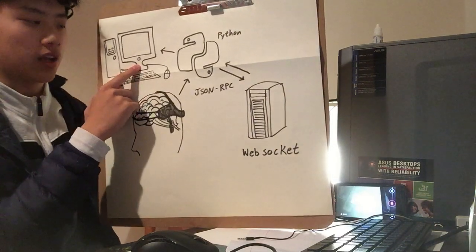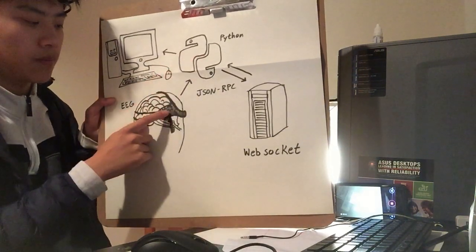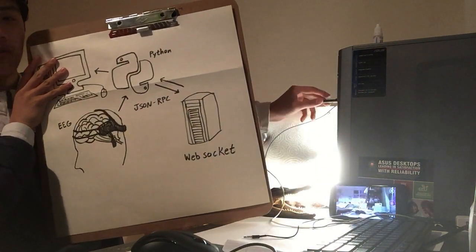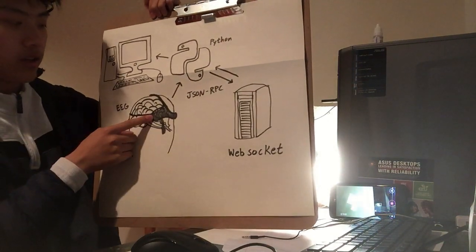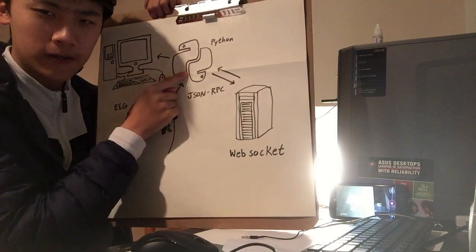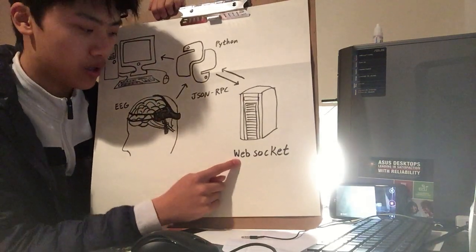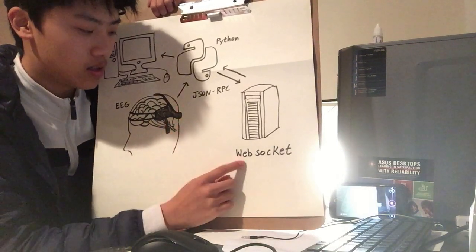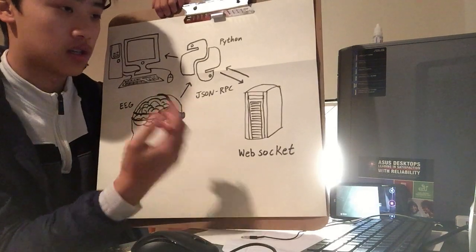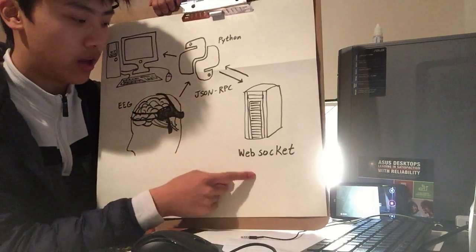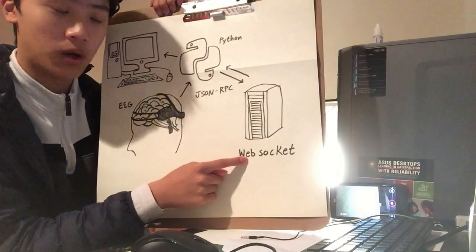I'm developing something, so it actually sends the signal to a Python program I've developed. To do that it uses Bluetooth — I have a USB dongle connected at the USB port of my computer. A command is something I set previously by wearing this EEG; the data is sent to a WebSocket server, which stores the data corresponding to each command, through a JSON-RPC, which is a method of communication between the Python program and the WebSocket server.